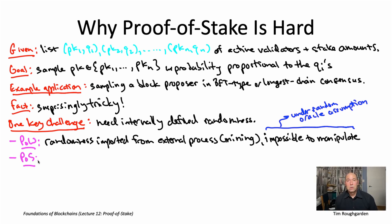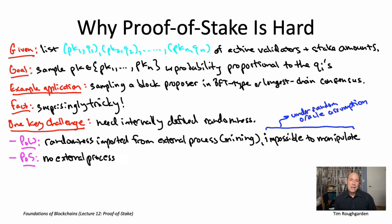With a proof-of-stake blockchain protocol, meanwhile, there's no clear analog to this external mining process that for proof of work is effectively providing the protocol with fair coin flips. In the proof-of-stake world, the protocol is stuck trying to generate randomness knowing only the stuff from within its hermetically sealed environment — in other words, from the current state of the protocol.